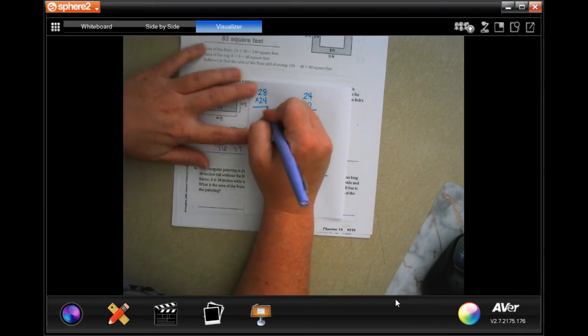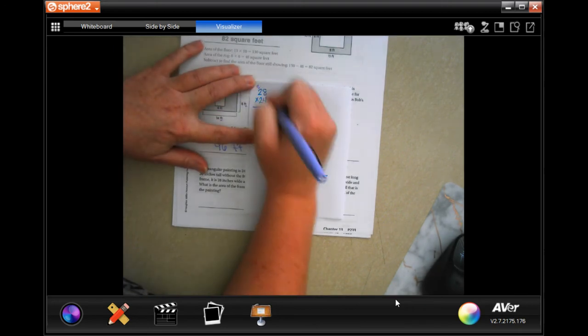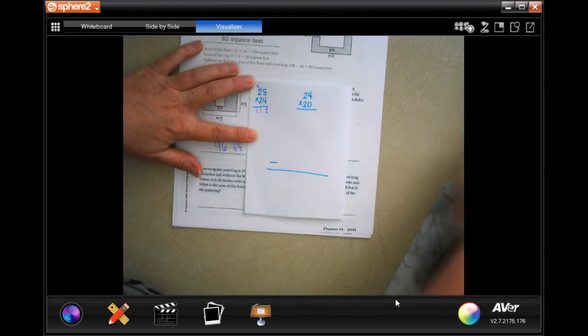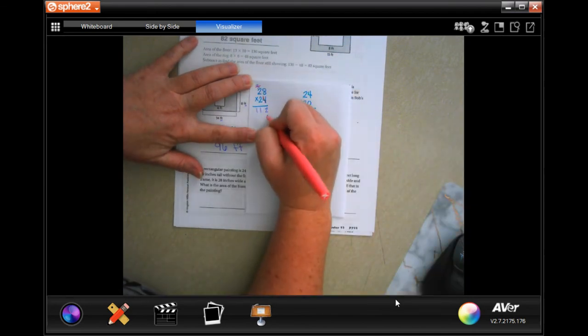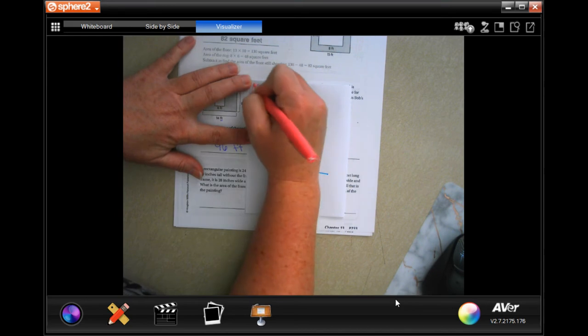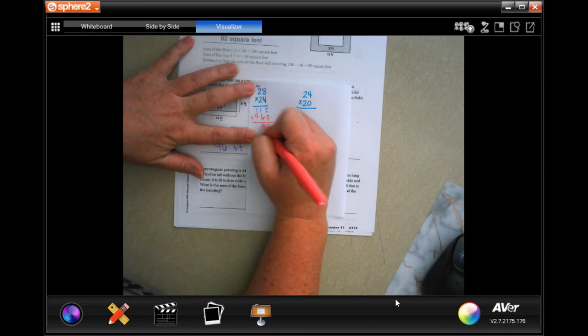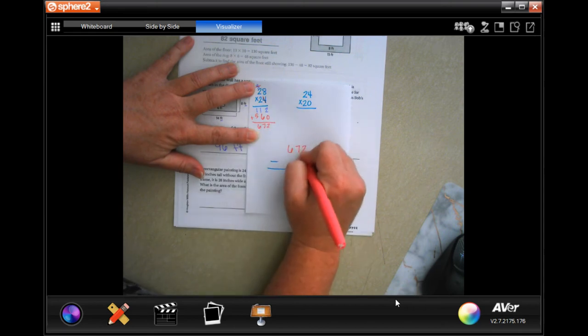So, 4 times 8 is 32, carry the 3. 4 times 2 is 8, plus 3 is 11. I'm going to go through and tick, tack, and toe. 2 times 8 is 16, carry the 1. 2 times 2 is 4, plus 1 is 5. We're going to add that up. 2, 7, 6. So, 672.